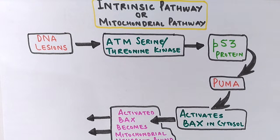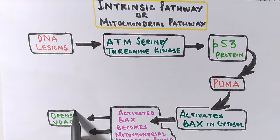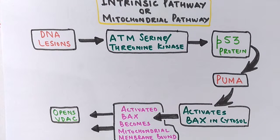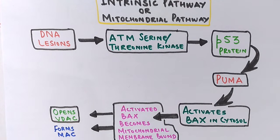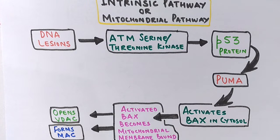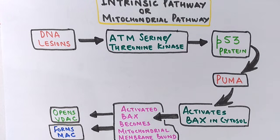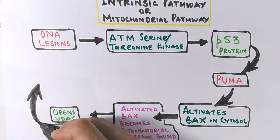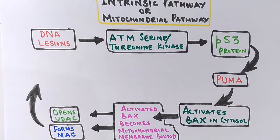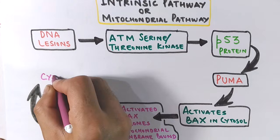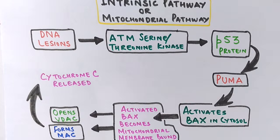The Bax protein opens VDAC channels of mitochondria. VDAC stands for voltage-dependent anionic channels, and it is also believed to form MAC — mitochondria apoptosis-induced channel — on the mitochondrial membrane. This is not the membrane attack complex seen in immune reactions. Finally, after a series of reactions in mitochondria, in the presence of reactive oxygen species and calcium ions, cardiolipin is oxidized by peroxidase, leading to the release of cytochrome C into the cytosol.